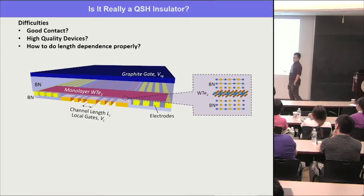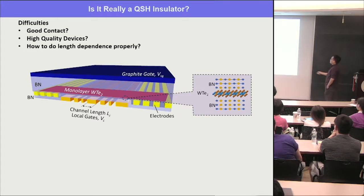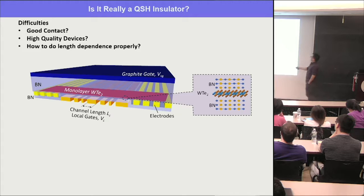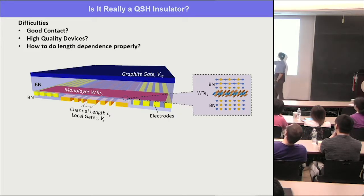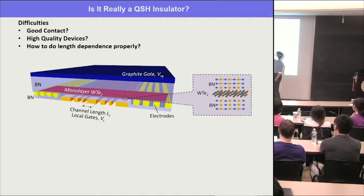The real challenge is whether the conductance is truly quantized to e²/h per edge — the key signature of the quantum spin Hall effect. To overcome previous device limitations, you need: very good contact to the 1D edge mode (same material contact: doped WTe2 to edge mode of WTe2), high device quality from BN encapsulation with embedded contacts, and length dependence study. The new device has graphite top gate, BN encapsulation, contacts only on two sides, and multiple local bottom gates of different widths.